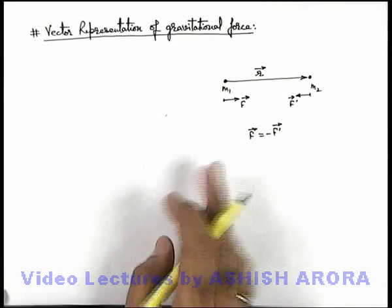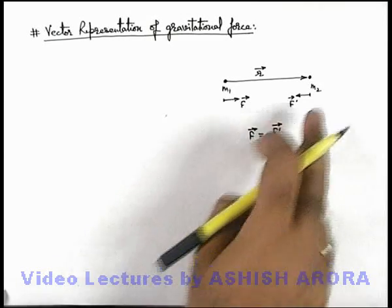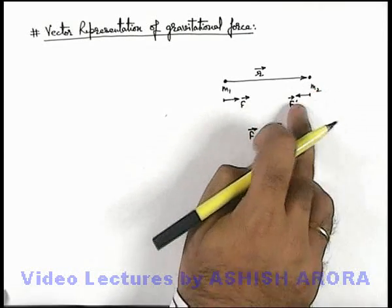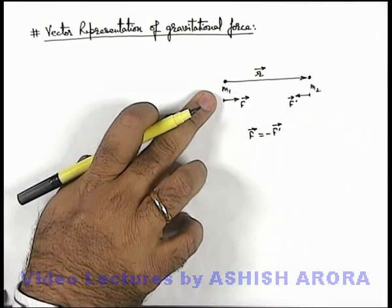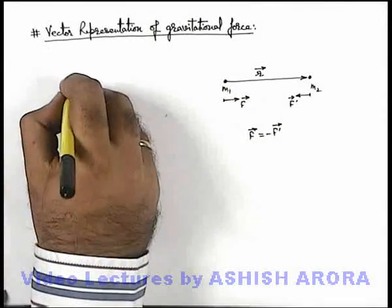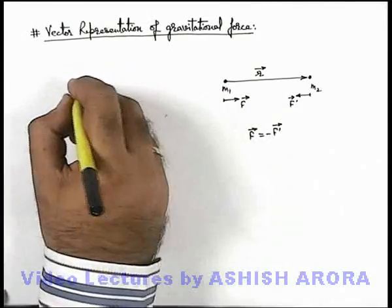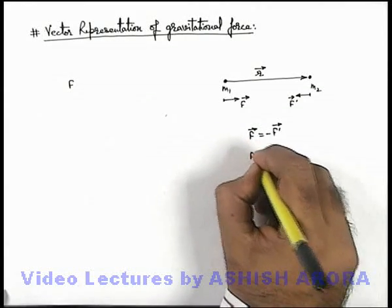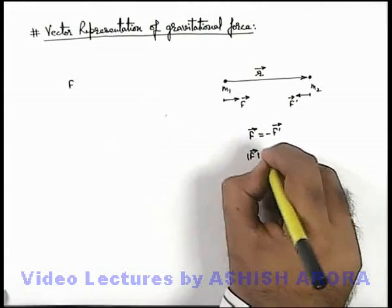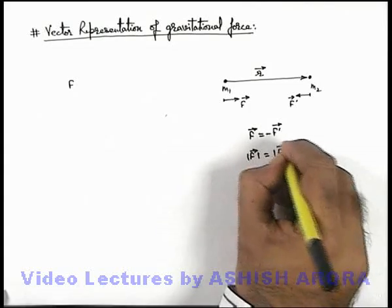In this situation if we wish to find out the magnitude of these forces, the force which is acting on m2 applied by m1, this can be given as the magnitude F. If we consider the magnitude of F vector, this is equal to magnitude of F dash vector.